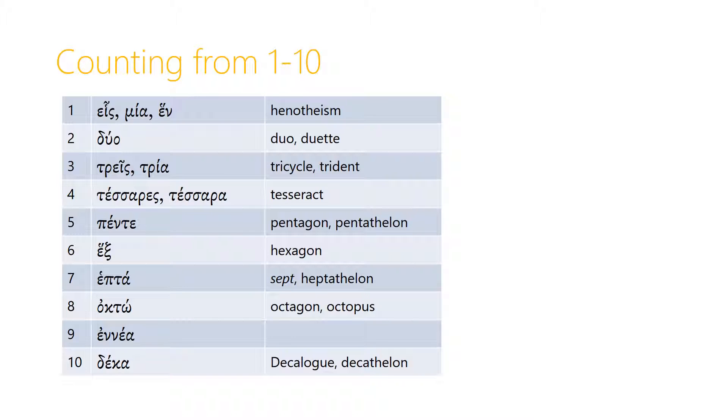Four is tesseris, and the neuter form is tessera. And this is where we get the term tesseract. If you've ever watched Doctor Who, you might have come across that term tesseract, and that's where we derive the term from. A tesseract is a four-dimensional cube.